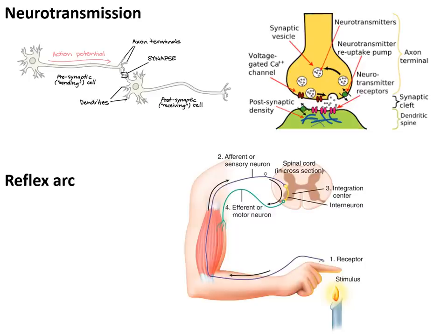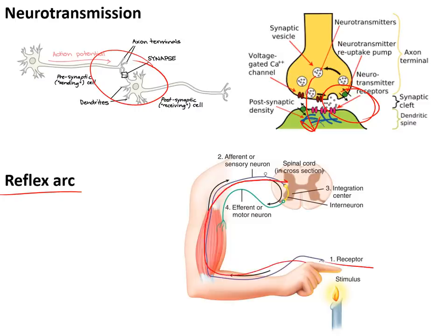Neurotransmission is the process of passing a nerve impulse from one nerve cell to another, involving chemicals called neurotransmitters released across the gap between two nerve cells called a synapse. The reflex arc allows us to make very quick decisions without thinking, to keep us safe. A stimulus is detected by a receptor cell, which sends a message up a sensory nerve to the central nervous system. Relay neurons make a decision and pass an impulse back down a motor neuron to a muscle, causing a response such as moving away.